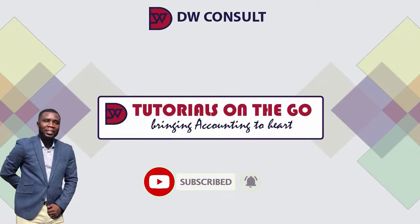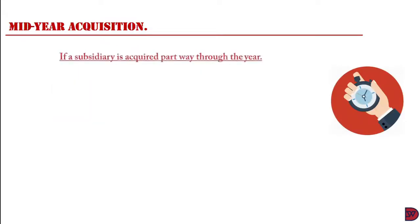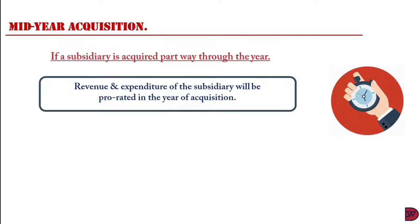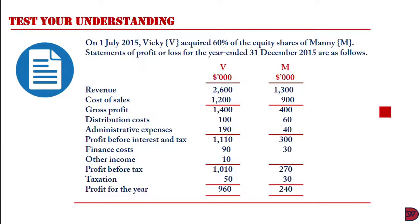Now today's episode's lecture: Mid-year Acquisition. If the acquisition of a subsidiary is done in the course of an accounting year, its results must be prorated in the year of its acquisition. Revenue and expenses are to be assumed to accrue evenly unless otherwise stated. So let's test our understanding.